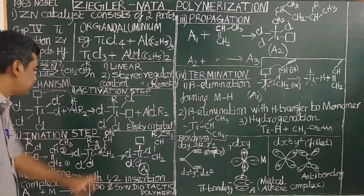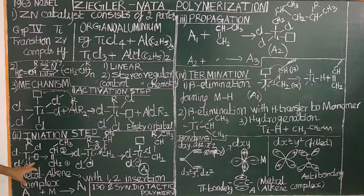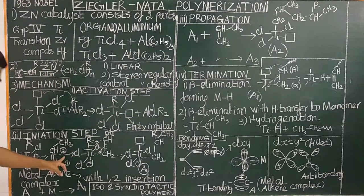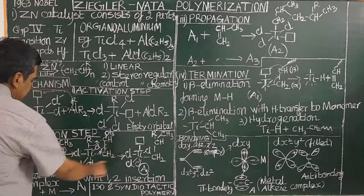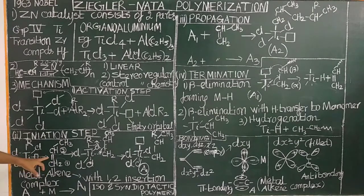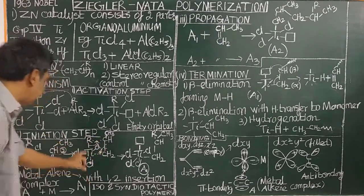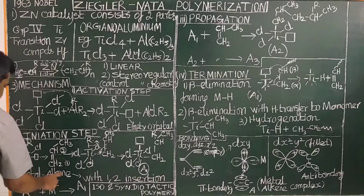Next is the initiation step. In the initiation step, the activated complex reacts with the alkene to form a metal-alkene π-complex. This π-complex is an intermediate, involving π electrons in the bonding.